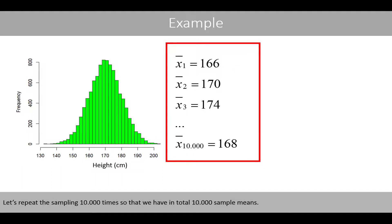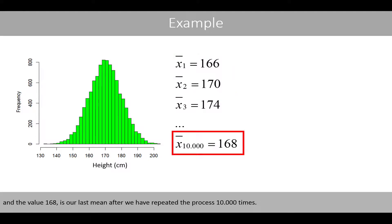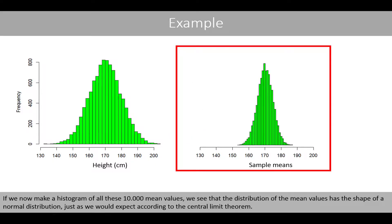Let's repeat the sampling process 10,000 times so that we have in total 10,000 sample means. These two mean values are from our previous example, and the value of 168 is our last mean after we have repeated the process 10,000 times. If we now make a histogram of all these 10,000 mean values, we see that the distribution of the mean values has the shape of a normal distribution, just as we would expect according to the central limit theorem.